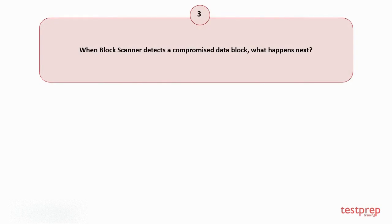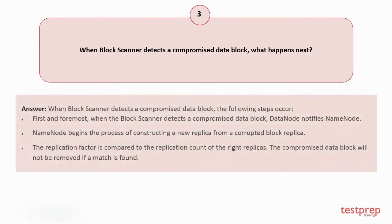Question number 3: When block scanner detects a compromised data block, what happens next? Your answer is: When block scanner detects a compromised data block, the following steps occur. First and foremost, when the block scanner detects a compromised data block, data node notifies name node. Then, name node begins the process of constructing a new replica from a corrupted block replica. The replication factor is compared to the replication count of the right replicas. The compromised data block will not be removed if a match is found.